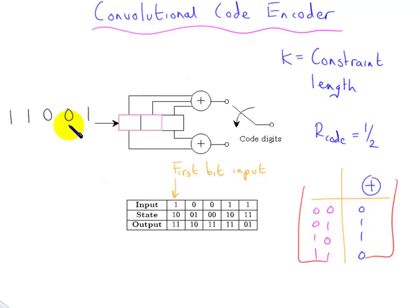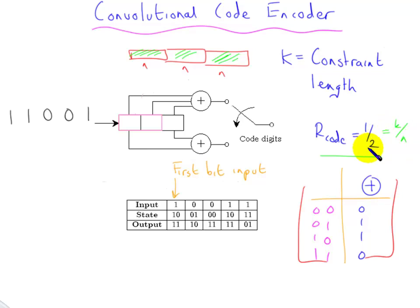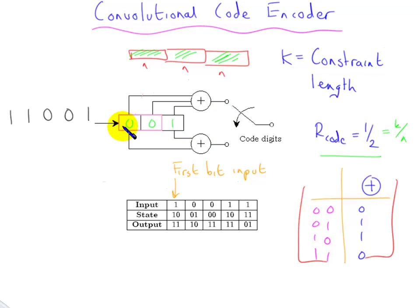Unlike block codes where K digits enter and N digits exit, and each code word is independent of the others, in convolutional encoding that is not the case. In this particular case, one digit enters and two come out, so the code rate is one-half, K equals one and N equals two. That single digit which enters will move along, influencing subsequent output code digits. That's the main difference between convolutional encoding and simple block codes.